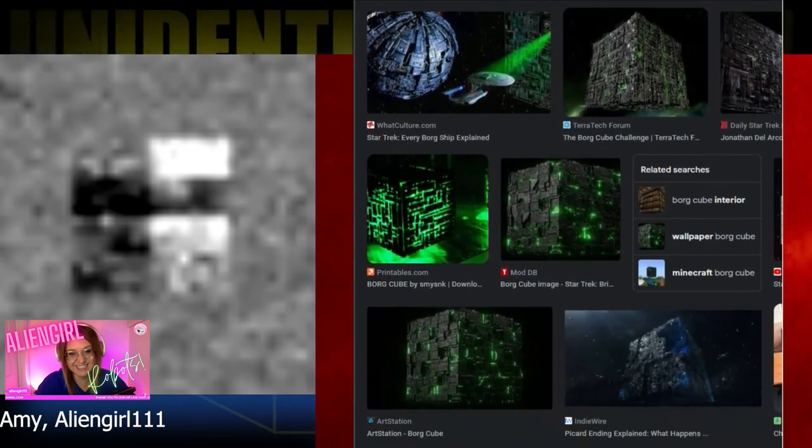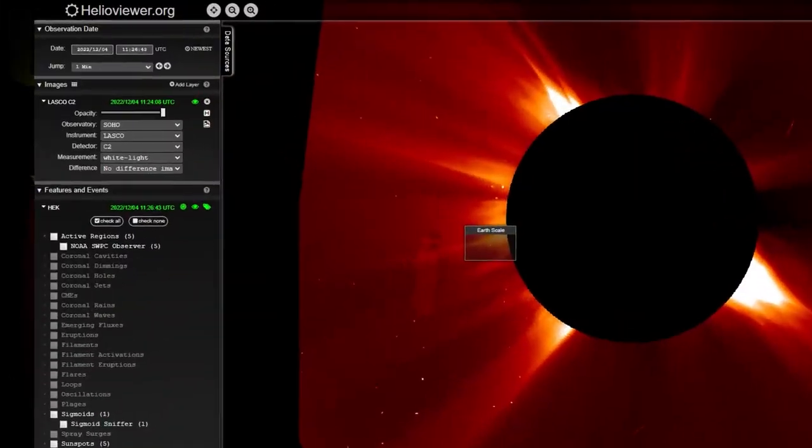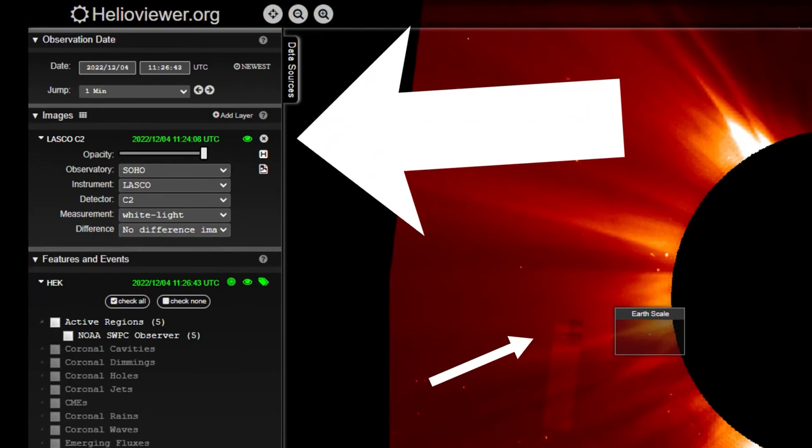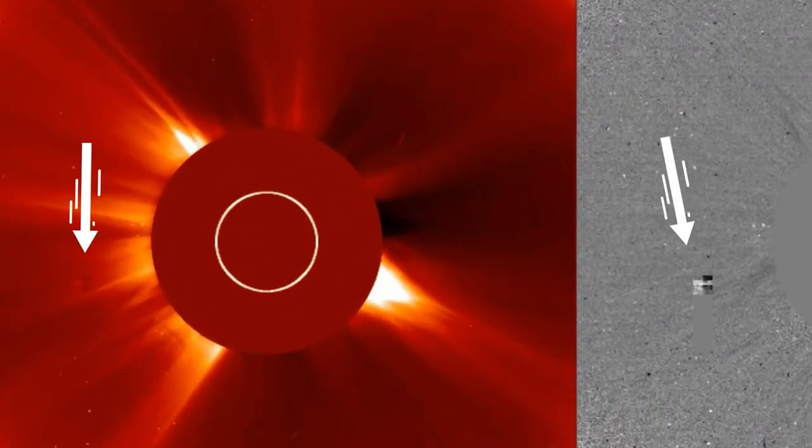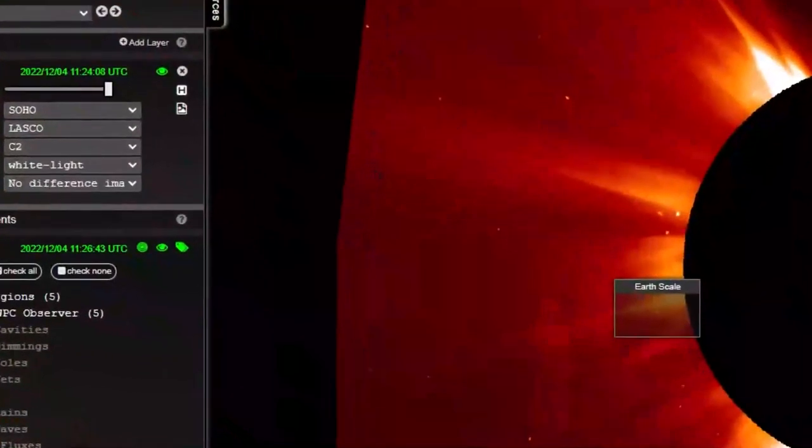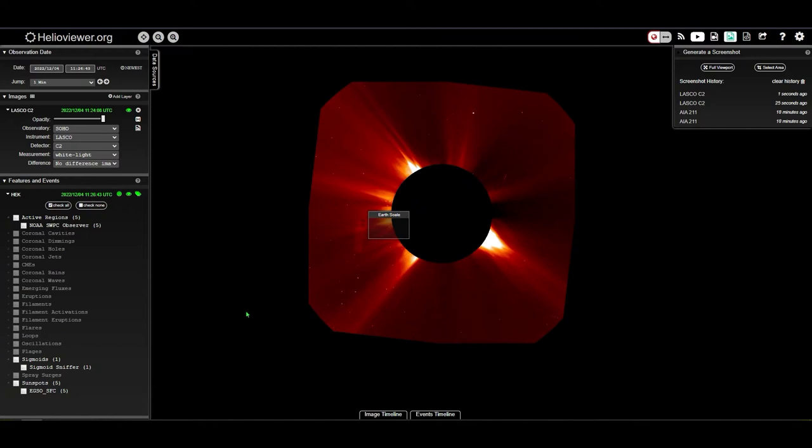On December 4th, the Lasco Combination satellite took this image that's been delivered through the Helios viewer. The Helios viewer is an open-source scientific data repository from various solar observatories from around the world. And it was pinpointed that this cube-like object was found in one of the images reported on December 4th. If we look at this image, it does look cube-like in structure. Cube-like structures have been reported by experiencers. So the cube-like structure is something that we have seen through multiple different UFO reporting organizations.